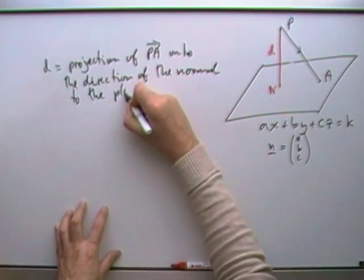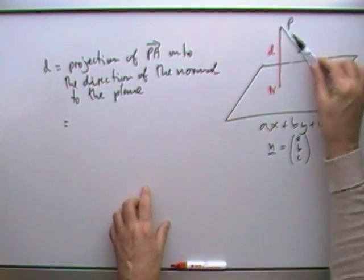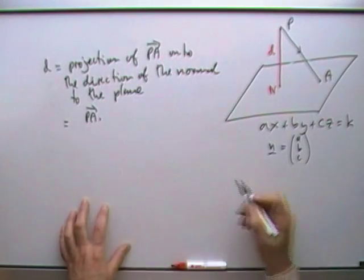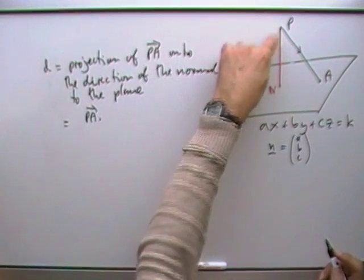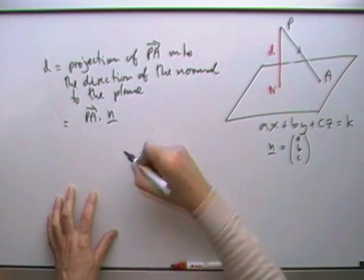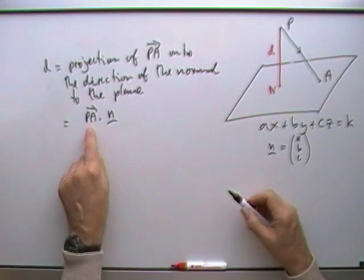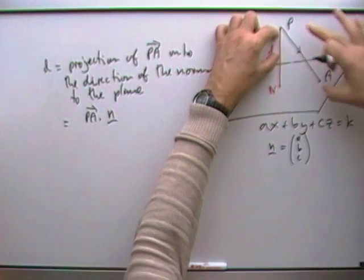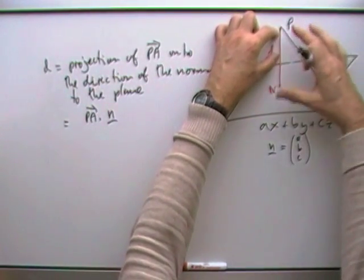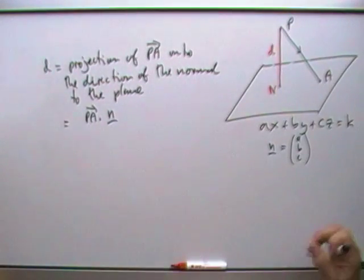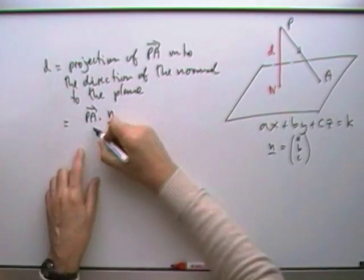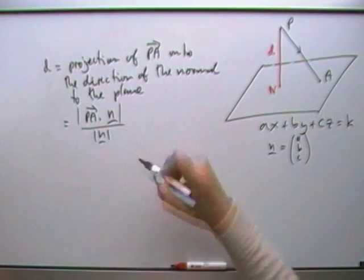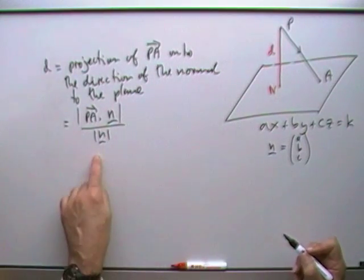What that means in practice is this: the projection of PA onto the normal is the scalar product. So that would be PA dot any vector that lies in that direction. PA dot N would do. Now PA dot N means the length of N — say it's a length of 2 — times the projection of PA, which is what you want onto it, say that's 6, giving an answer of 12. But if you divide by the length of N, you'd be dividing by 2, leaving the 6 that you want. So divide by the length of N, and put the absolute value there just in case they're going in opposite directions. That gives the distance.